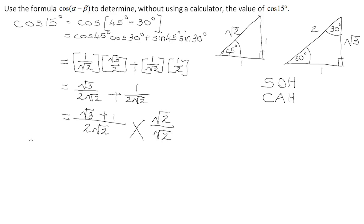Note we multiply by √2/√2, not 2·√2, because we only want to remove the surd. Multiplying the monomial by the binomial: √2 · √3 = √6, and √2 · 1 = √2, over √2 · √2 = 2 times 2 = 4. Therefore cos 15° = (√6 + √2)/4, keeping the answer in surd form without a calculator.